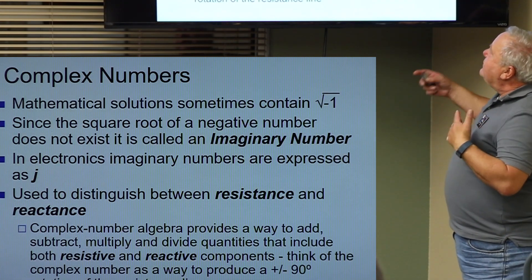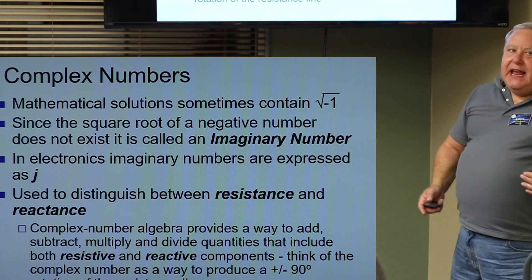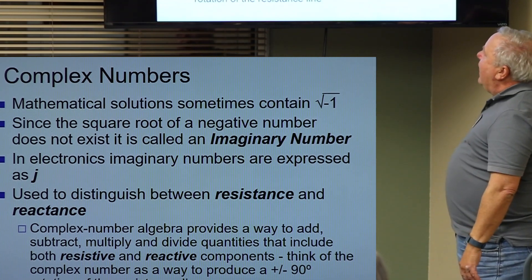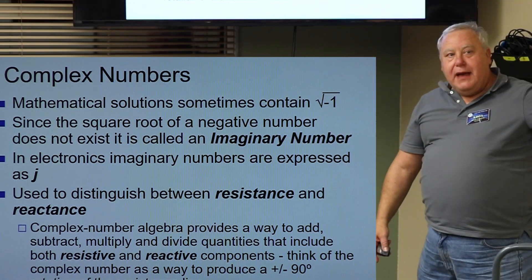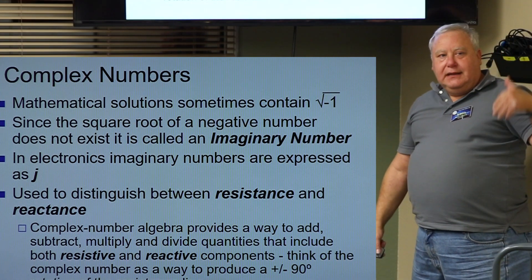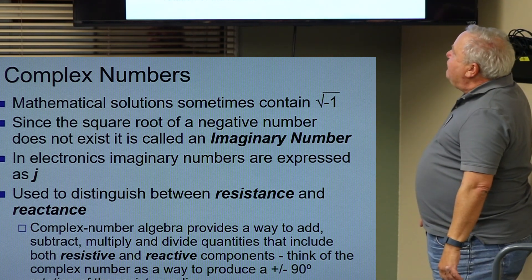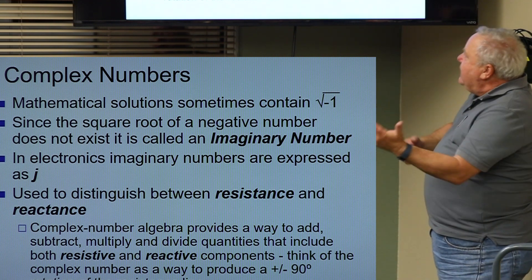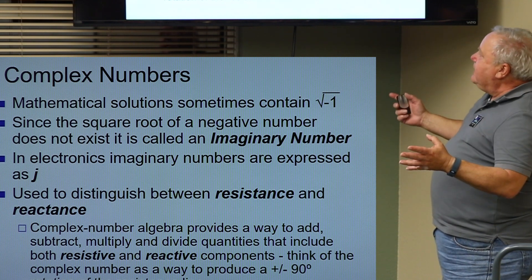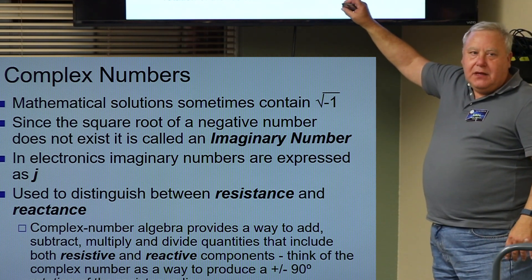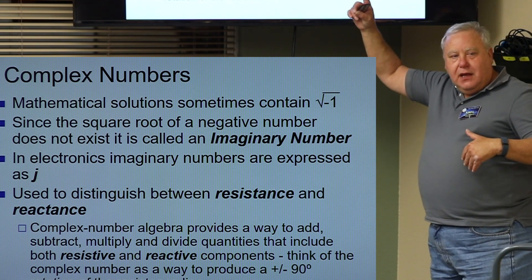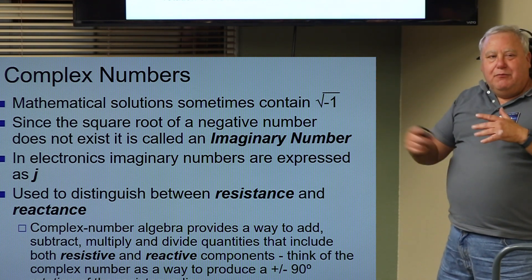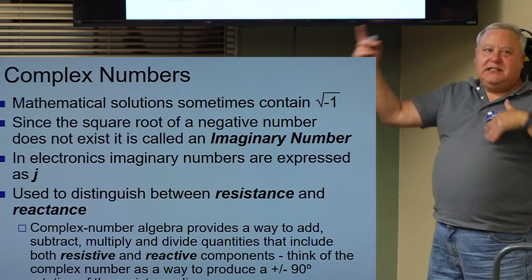Mathematics solutions sometimes contain square roots of a negative number, which are not real numbers — that's where imaginary numbers come in. In electronics they often use the symbol I for imaginary, but since I is used for current, we use J to distinguish between resistance and reactance. Complex number algebra allows us to add and subtract, and that's why we have plus and minus 90: plus 90 is inductive reactance, and minus 90 is capacitive reactance. It's still 270, but it makes more sense to say plus and minus.